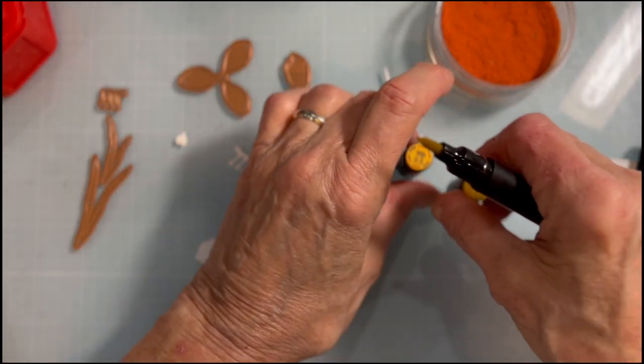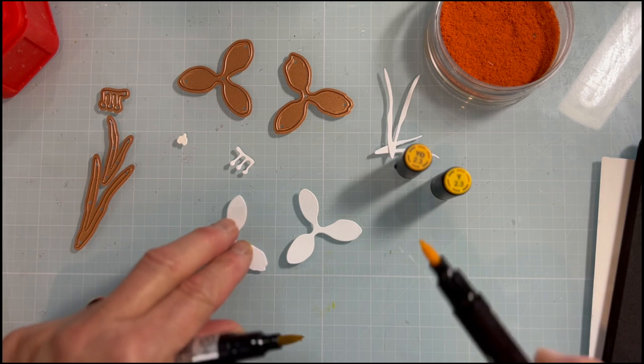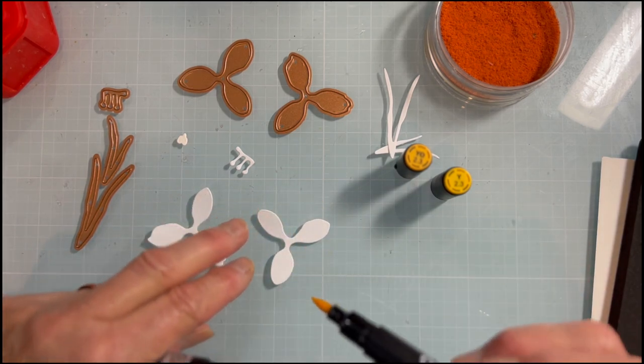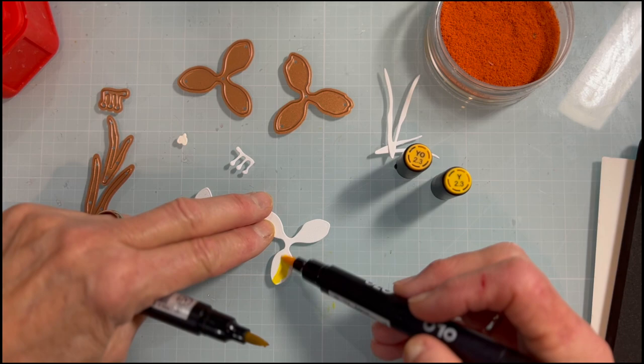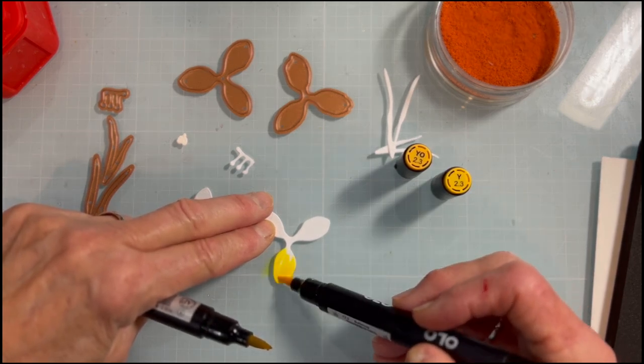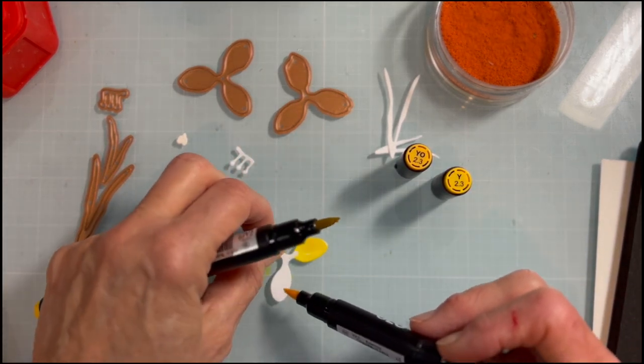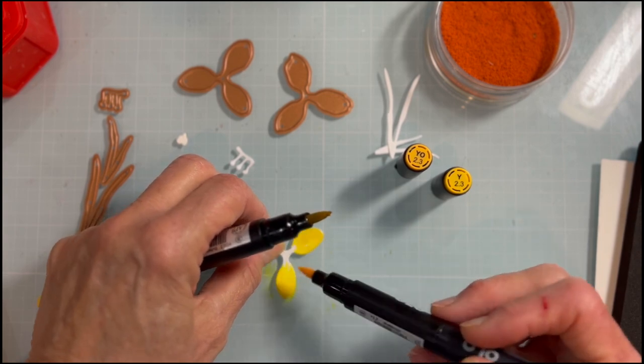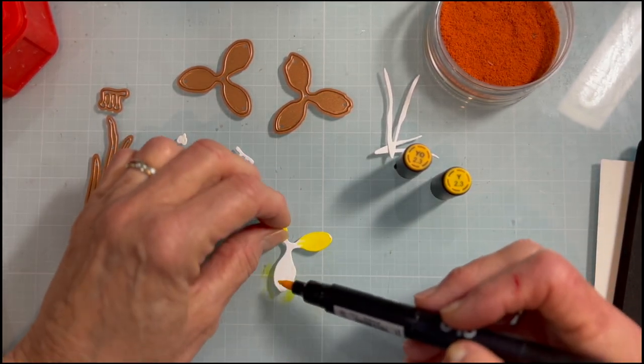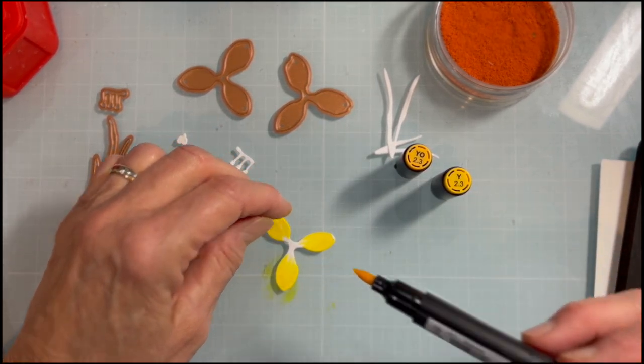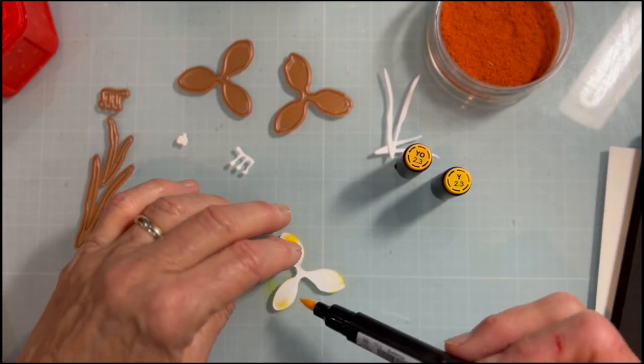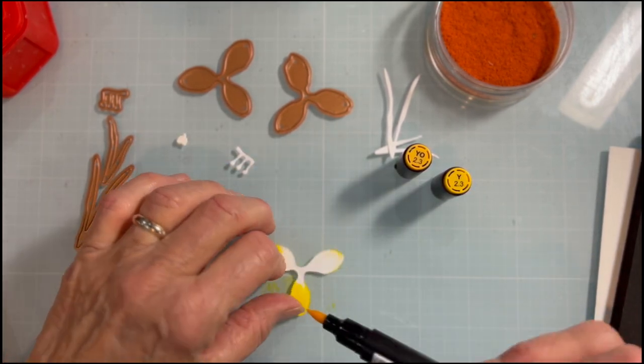I'm mixing a couple of colors from Olo. This is Y2.3. I want a rich yellow, so I'm going to add the Y2.3 on top of it. I'm going to turn it around on the underside here.